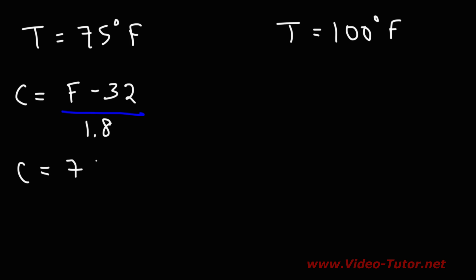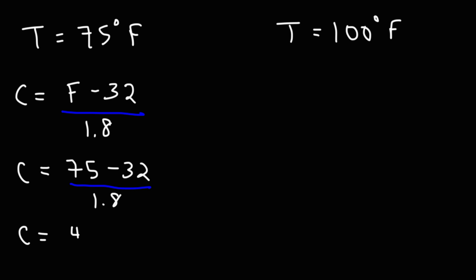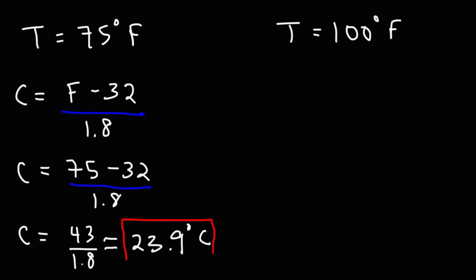So let's replace F with 75. 75 minus 32 — well, 7 minus 3 is 4, 5 minus 2 is 3, so it's 43. Then 43 divided by 1.8 — I'm going to use the calculator for that one. This is approximately 23.8 repeating, but we can round that to 23.9. So that's the Celsius temperature. If it's 75 degrees outside, the Celsius temperature is around 23.9.